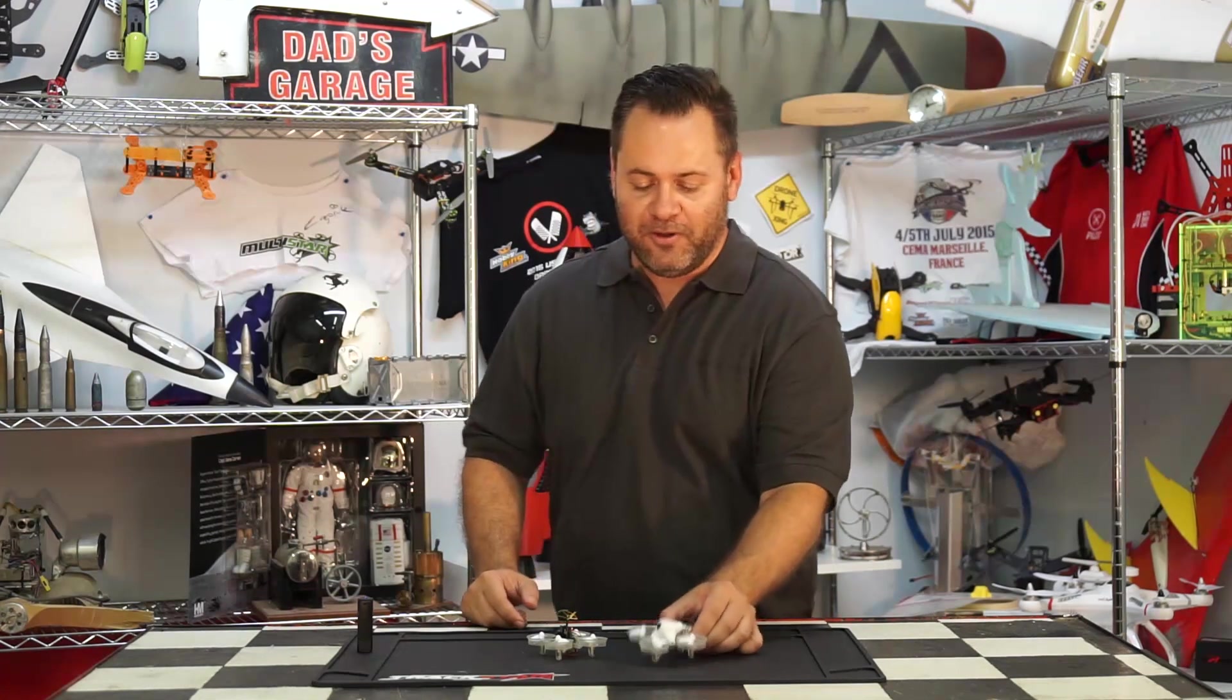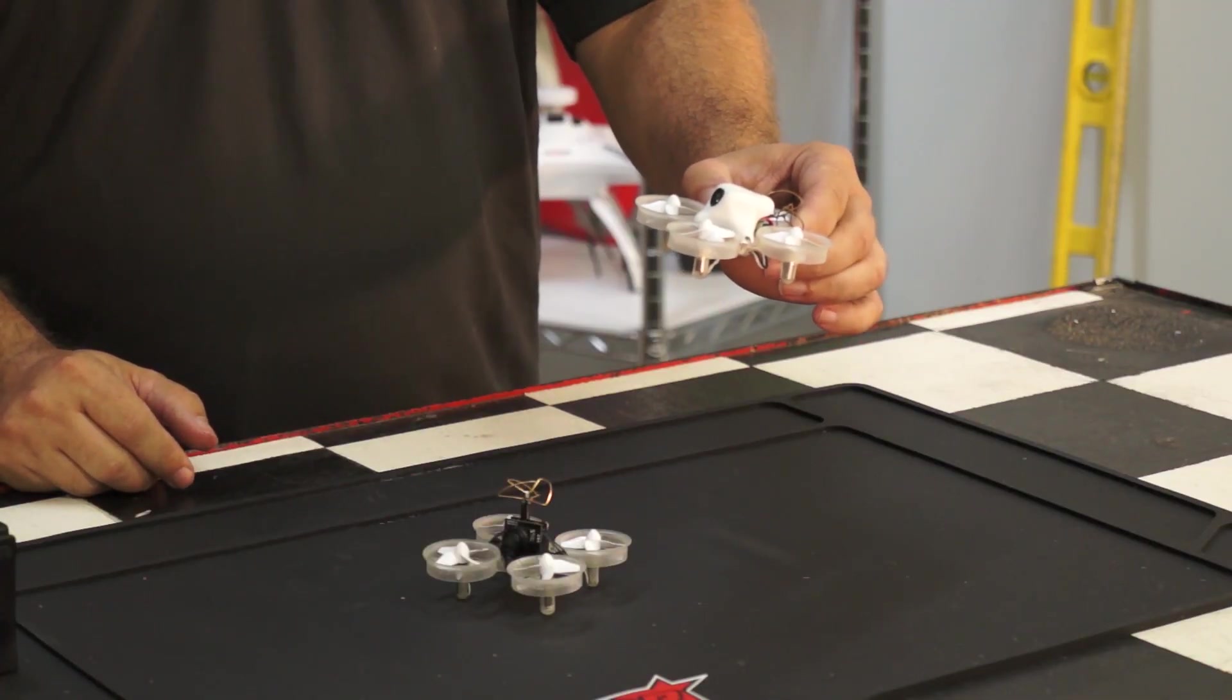Welcome back to another episode of 100% Epic. I'm Chris. Today we're going to be building the mullet version Tiny Whoop - stronger, lighter, faster, and way much more cooler.